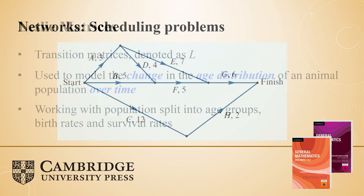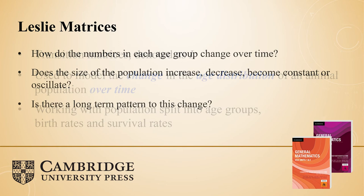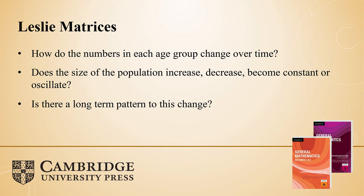Moving on to Leslie matrices — this is brand new to everyone in the room. Leslie matrices are a type of transition matrix, denoted with capital L. They're used to model the change in an age distribution of an animal population over time. We're still talking about time and transitions, but splitting that up specifically into age groups. Within those age groups, we talk about the birth rate and the survival rate. Questions that come up include: how do the numbers of each age group change over time? Does the size of the population increase, decrease, become constant, or oscillate? And is there a long-term pattern to this change?